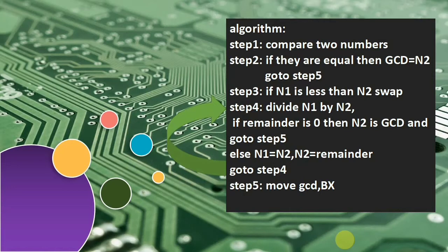If the remainder is zero, then N2 is the GCD and we go directly to step five, moving the contents of register BX into GCD. Otherwise, if the remainder is not zero, we take the second number into the first number and the remainder into the second number, and repeat the division at step four again. This is the logic for finding the GCD of two numbers.